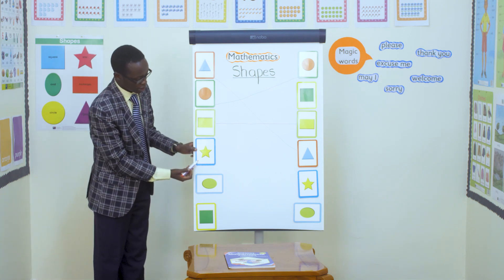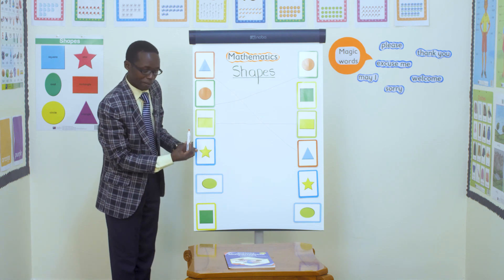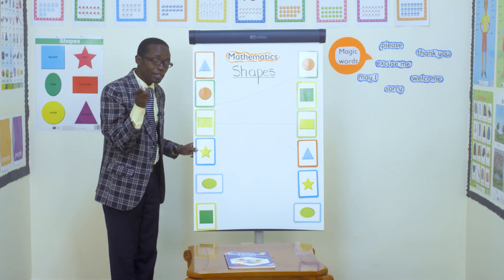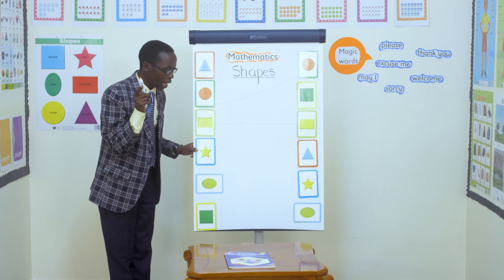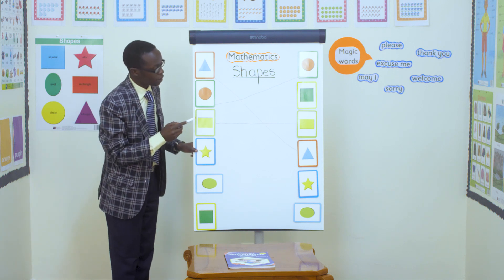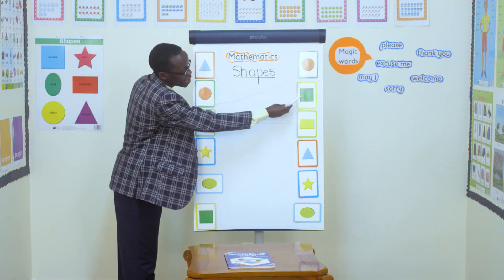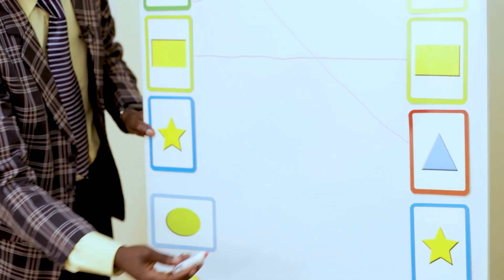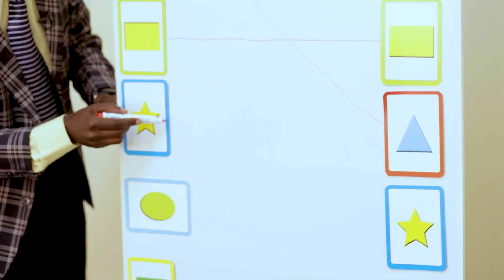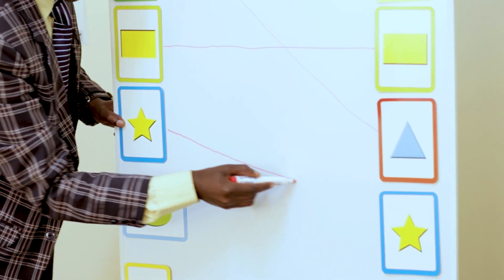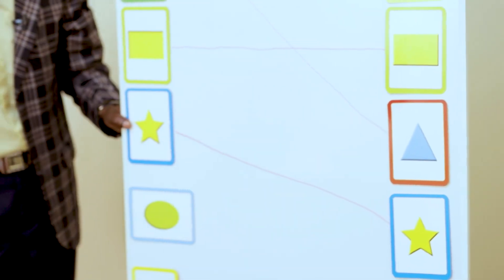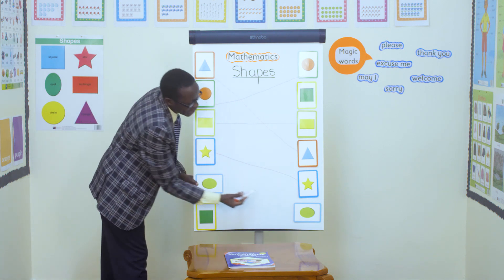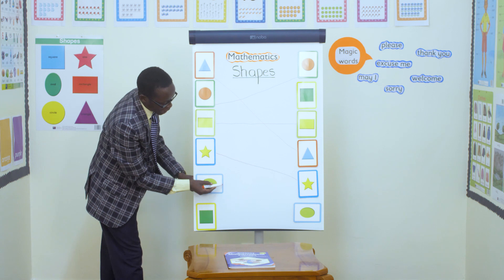What about this? It is a star. A star. Now let's look for a star on the other side. Is this a star? No. Star? No. A star? No. A star? No. A star? Yes. Then I take my pen and match. What about this one? It is an oval. Is this an oval? Yes. They look alike. I match. Wonderful.